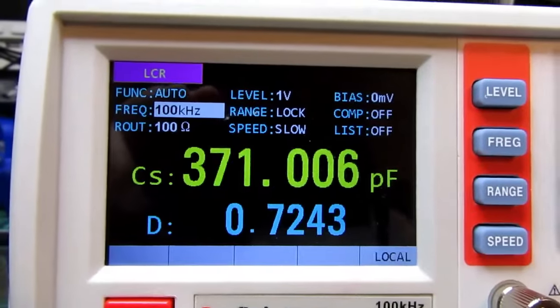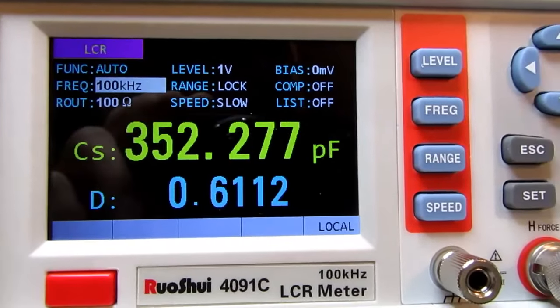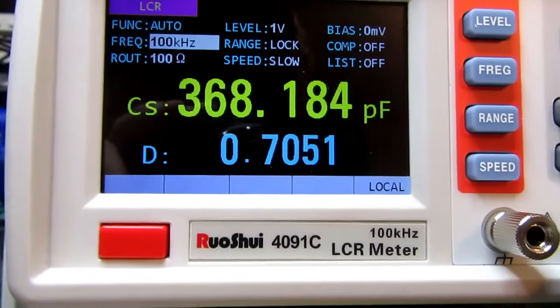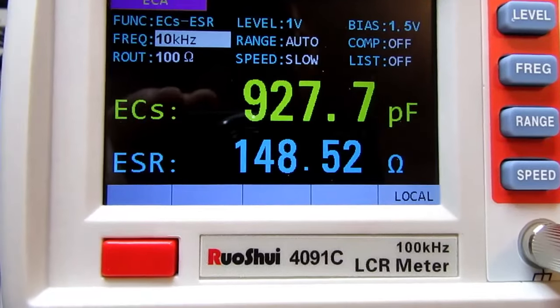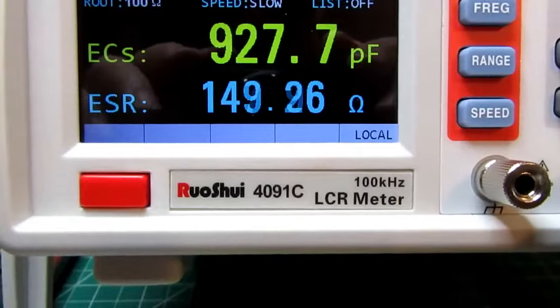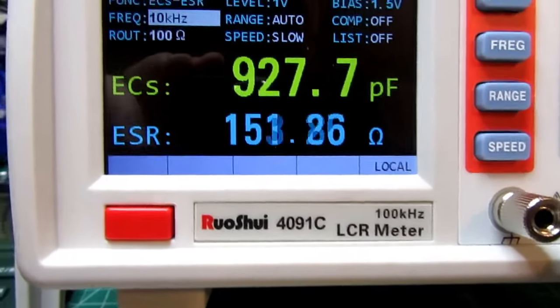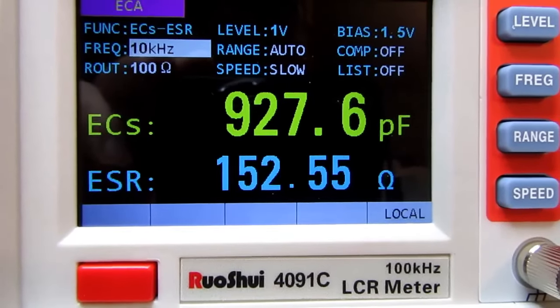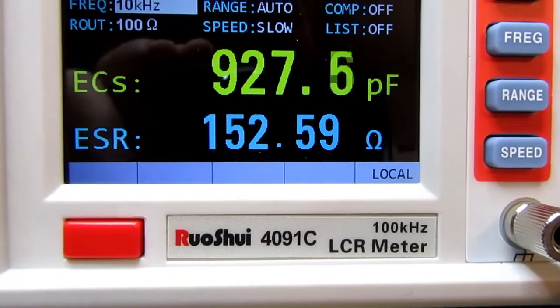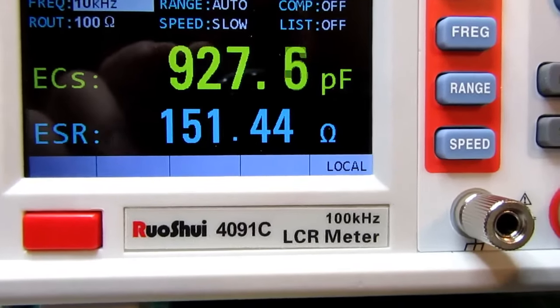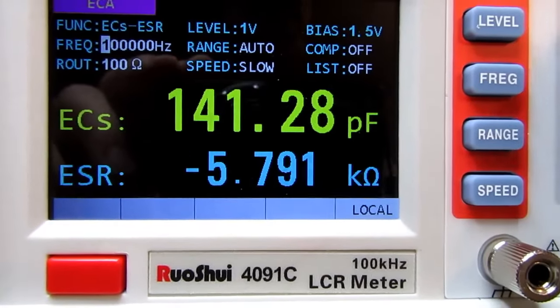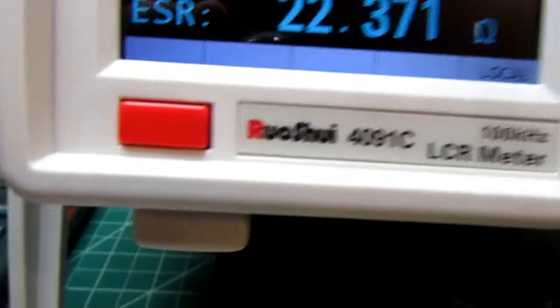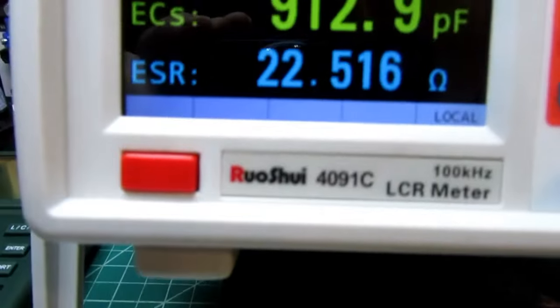So what was I trying to do here? I was trying to measure ESR. So I go back and push the button to read. It's reading, oh, it jumped down to 10 kHz for some reason. It didn't stay at 100 kHz. Let's try that again. 22 ohms ESR at 100 kHz. That's really close to the 23.7 I got. So far, so good.